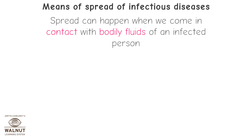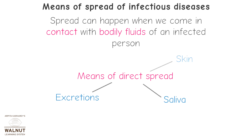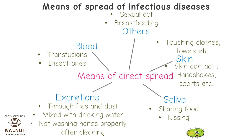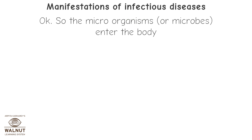Spread can also happen through direct contact with bodily fluids of an infected person — through excretions, saliva, skin, or blood. Other means include excretions carried by flies or dust mixed into drinking water, not washing hands properly, blood through transfusions or insect bites, saliva through sharing food or kissing, skin through handshakes or sports, touching clothes or towels, and through sexual activity or breastfeeding.